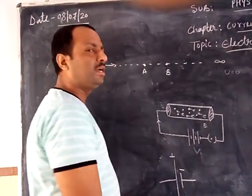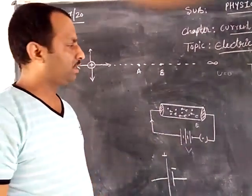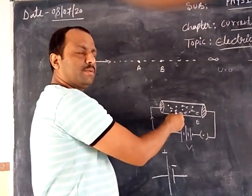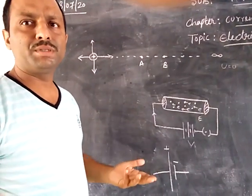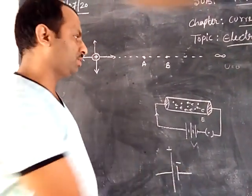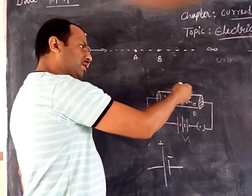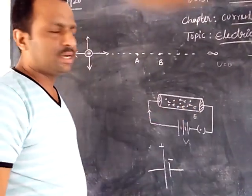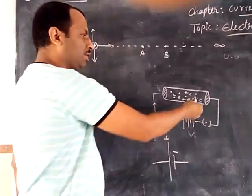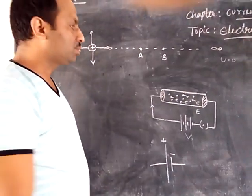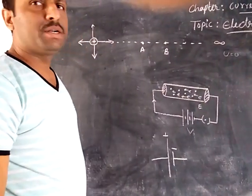Because potential difference is applied, an electric field is produced. When the electric field is produced, a force acts on the charges and they accelerate. The free electrons start moving from one end of the conductor to the other. The electrons undergo collisions but they do not stop — they keep moving from one end to the other. This is called drift velocity.